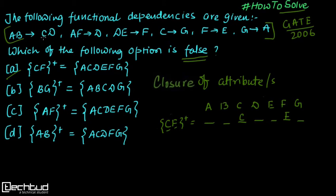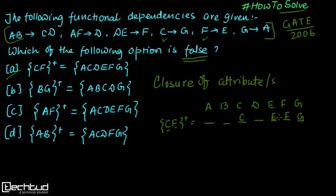We cannot use AB→CD because we don't have A and B. We cannot use AF because we don't have A. Similarly DE cannot be used. However, C→G can be used since we have C, so G is determined. We already have F, so using F→E we can determine E. Then using G→A, we can determine A.